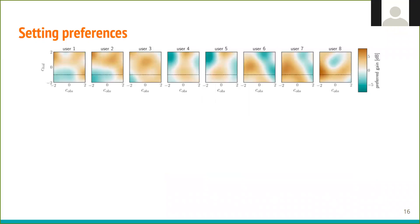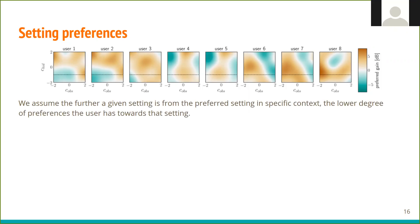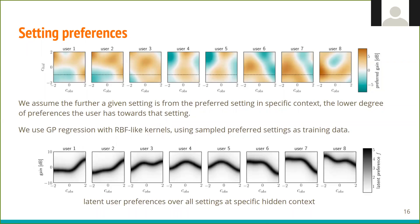The sampled settings are the preferred settings only, and in simulation we want to be able to evaluate the degree of user preference towards any setting in any context. For that, we assume that the further a given setting is from the preferred setting in specific context, the lower degree of preference the user has towards that setting. To achieve that, we use Gaussian process regression with RBF-like kernels, using sampled preferred settings as training data.